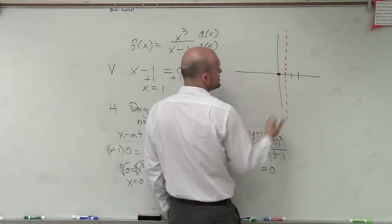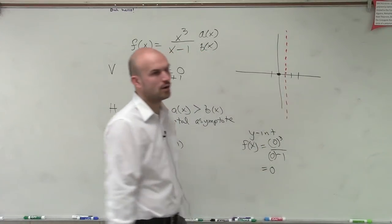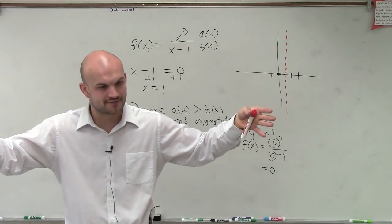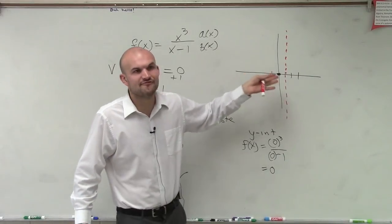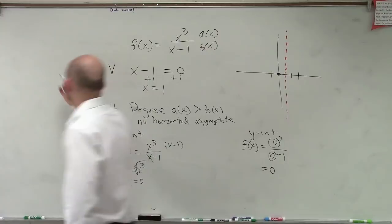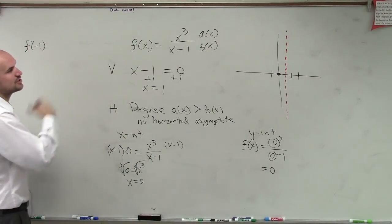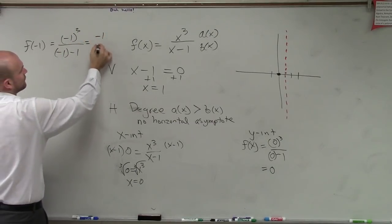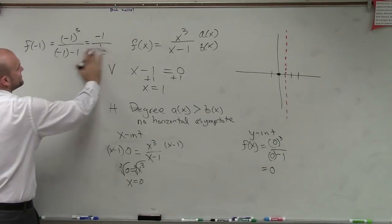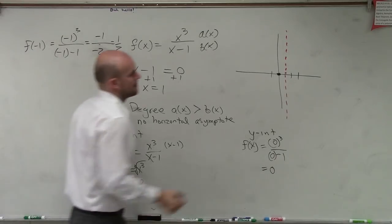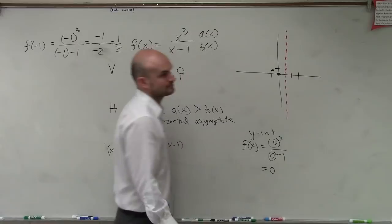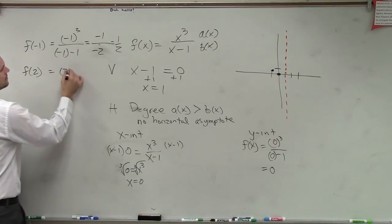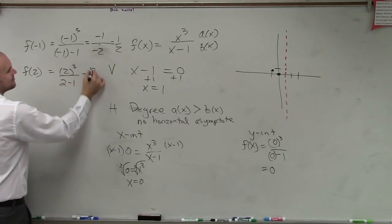Since the asymptote is at x equals 1, I would do x equals 2 and 3 for the right side. We already evaluated x equals 0, so let's evaluate x equals negative 1 for the left side. f(negative 1) equals negative 1 cubed over negative 1 minus 1, which is negative 1 over negative 2. Then f(2): 2 cubed equals 8 over 1, so at x equals 2 we go up to 8.